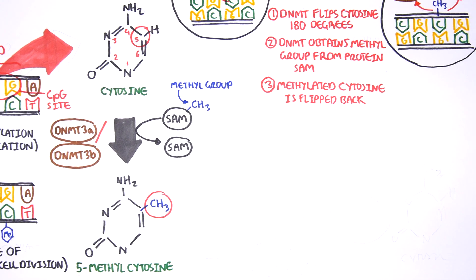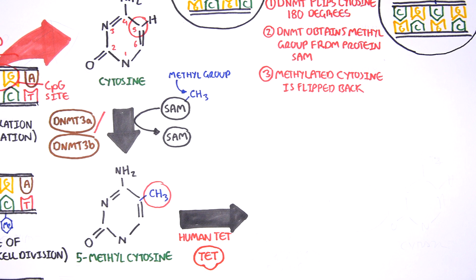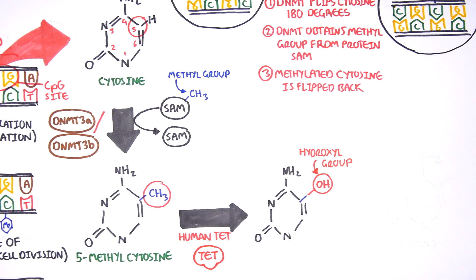Human TET, which stands for human 10-11 translocation, is another important enzyme that has a role in regulating DNA methylation patterns. TET is responsible for adding a hydroxyl group, initially to 5-methyl cytosine, forming 5-hydroxymethyl cytosine.